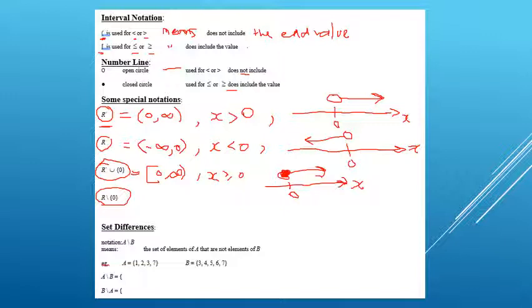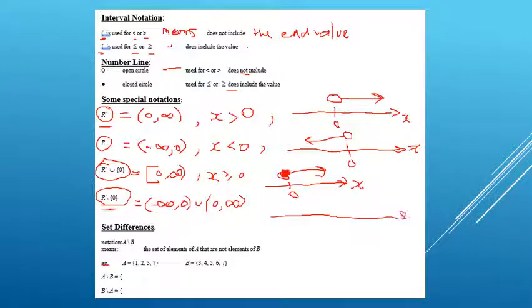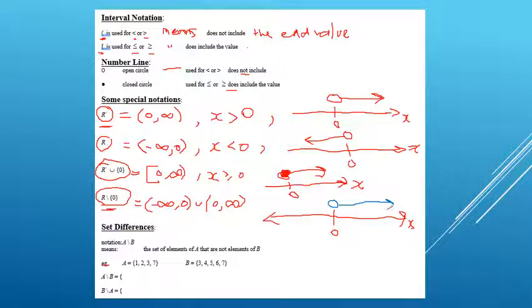This next special set is all real numbers excluding zero — written as R backslash {0}. This comes up in hyperbolas and truncus functions. In interval notation, we'd have to say negative infinity to zero not including zero, union zero to positive infinity. So writing R backslash {0} is a lot quicker. On a number line, we'd have an open circle at zero with arrows going both to the left and to the right.